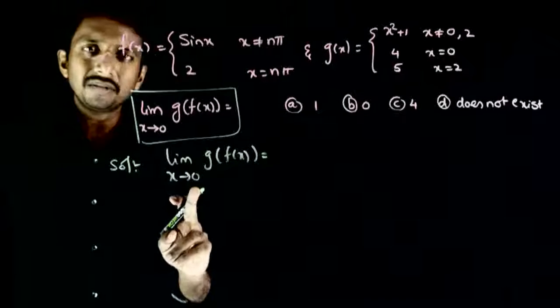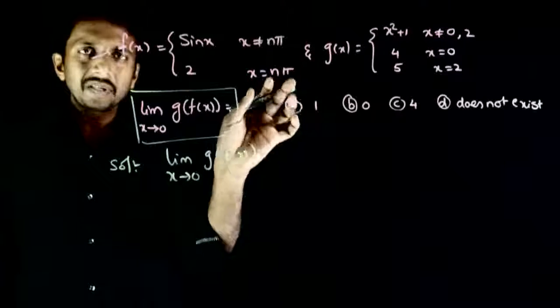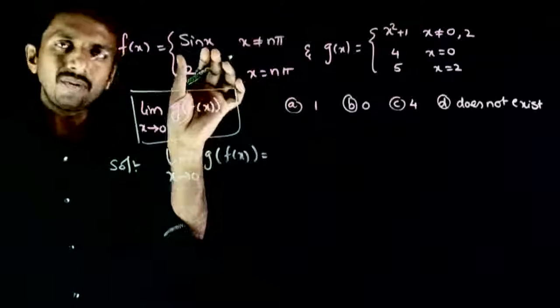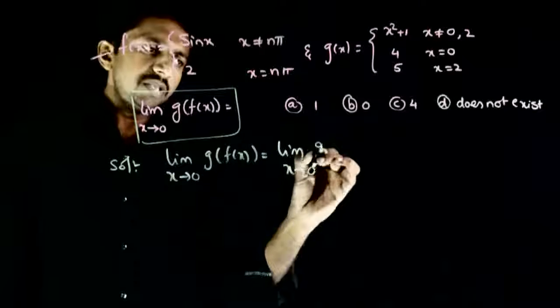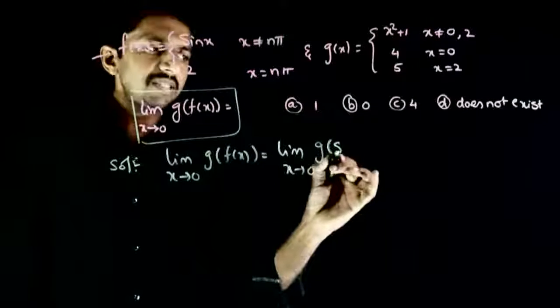that means x is not equal to 0, so f(x) is not equal to nπ, so f(x) equals sin x. Therefore, as x tends to 0, we evaluate g(sin x).